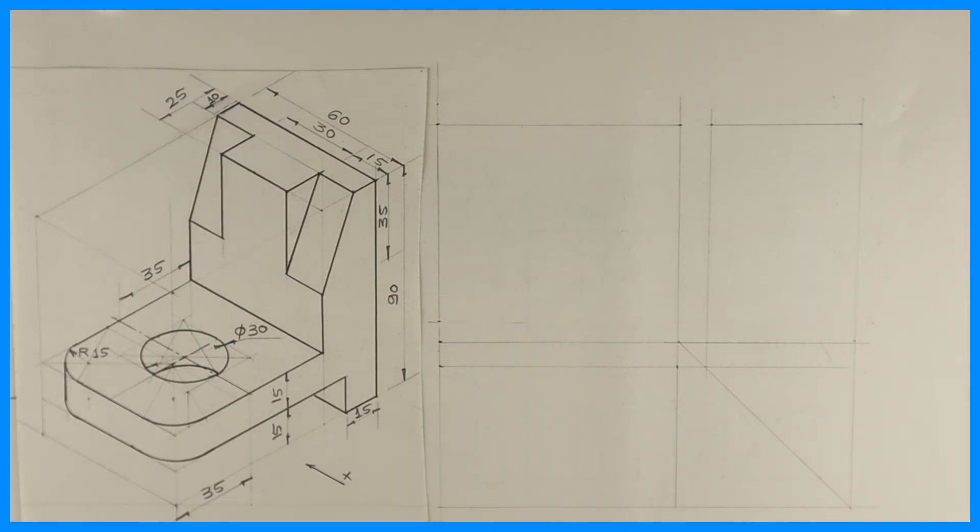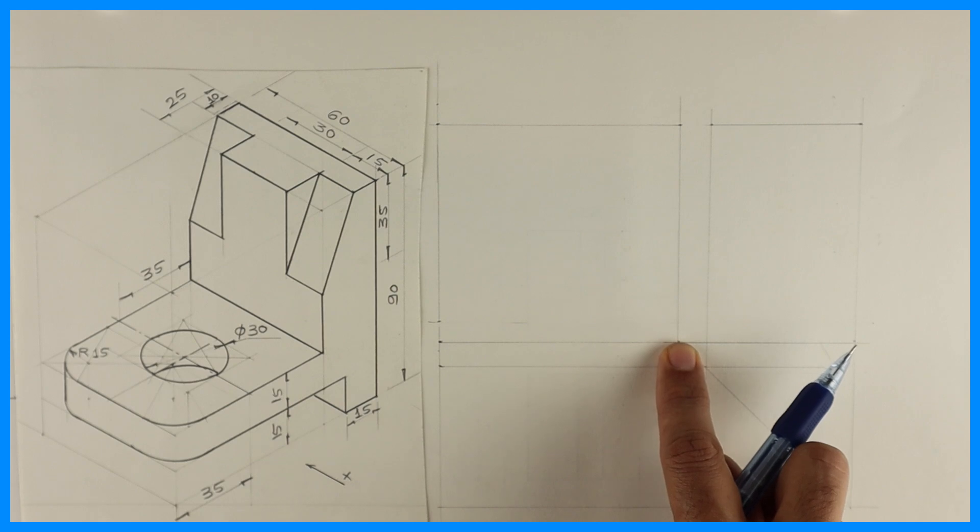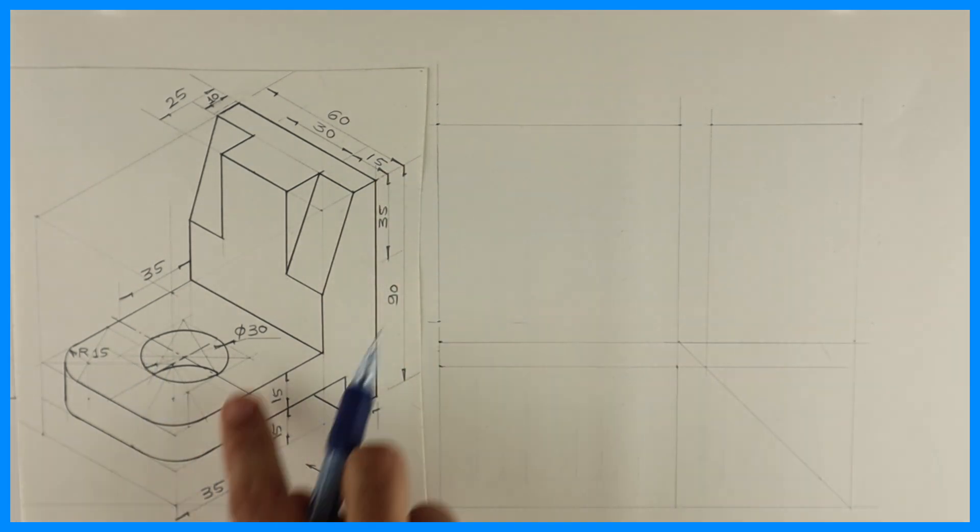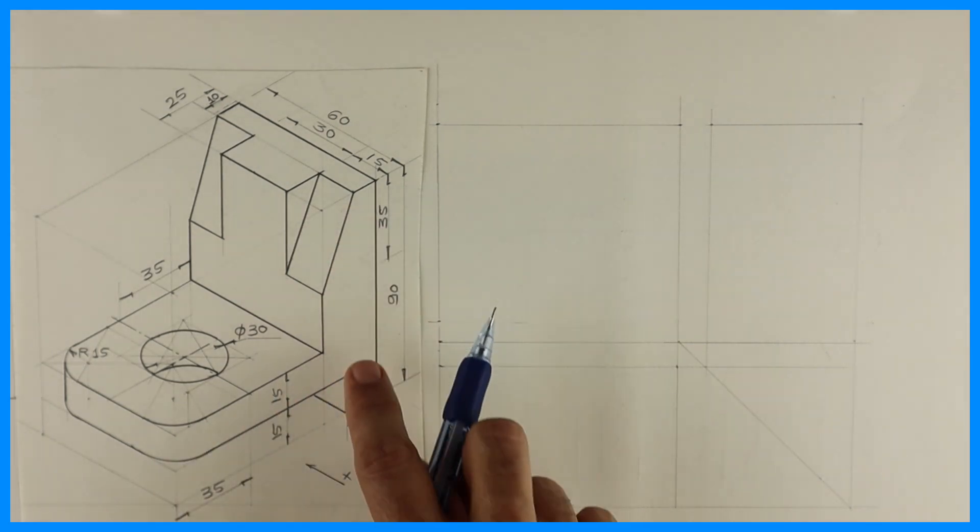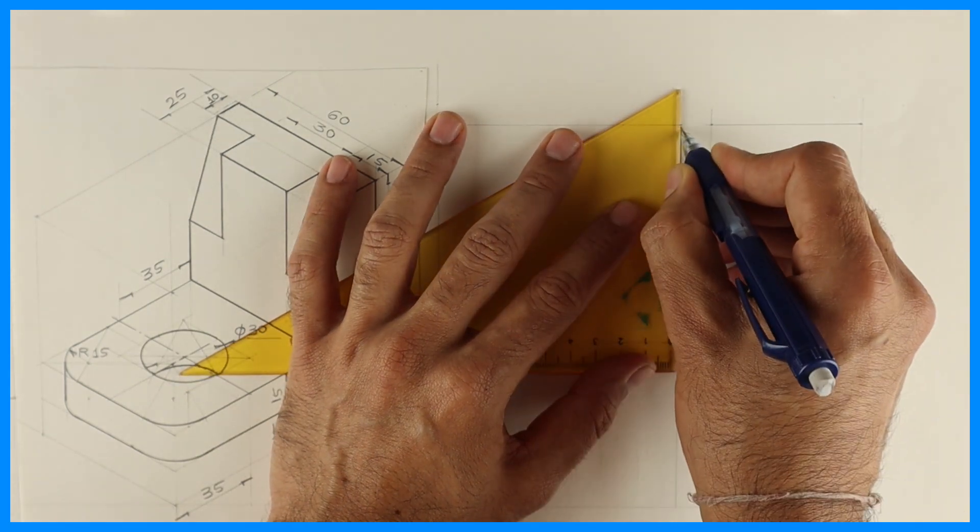Welcome to technical drawing. Today we are going to solve this sum in orthographic. If you see from front, this is length which is 95, height is 90, and width is 60. First we will draw layout and we'll start with front view. We'll draw this part first. We will draw a straight line of 90.